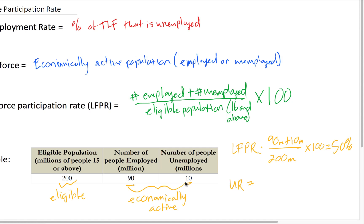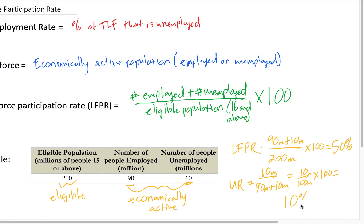Now we can calculate the unemployment rate by dividing the number of unemployed by the total labor force. We have 10 million people unemployed, divided by the labor force — the economically active population of 90 million plus 10 million, which is 100 million — times 100. So 10 million divided by 100 million, times 100, gives us an unemployment rate of 10%.